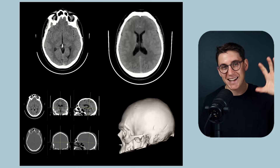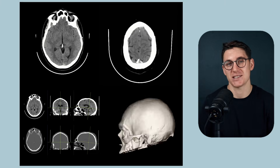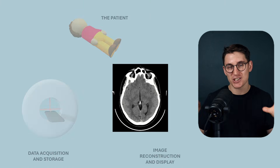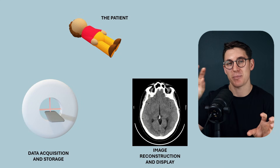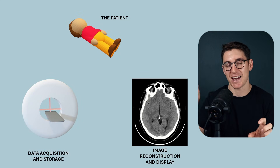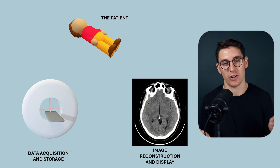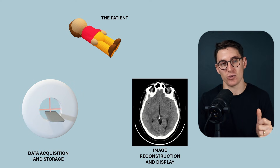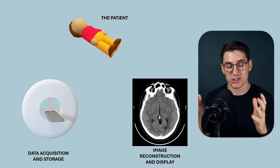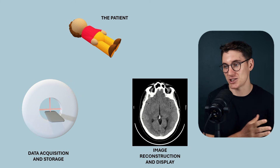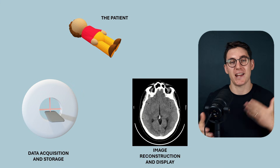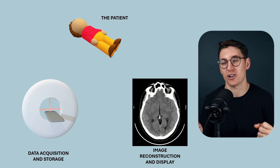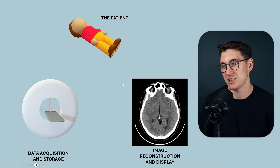We've now looked at data acquisition and image processing — two of the three major facets in CT imaging. The third facet is the patient. Is the CT scan going to answer the clinical question? Are there other examinations that provide the same clinical answer without exposing the patient to ionizing radiation? What region of anatomy do we need to cover? Do we need to give contrast? These are all decisions that need to be made with regard to the patient.